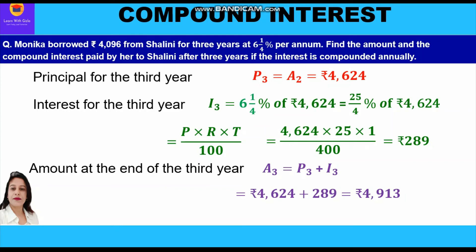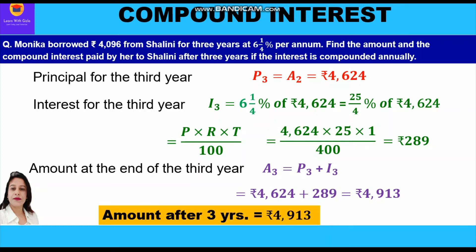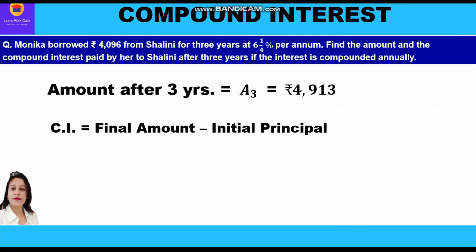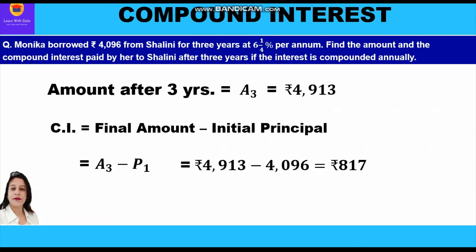This is the amount which Monica has to pay to Shalini after three years, that is rupees 4913. They are also asking us to find the compound interest, and compound interest is the difference between the final amount and the initial principal which Monica had borrowed. The final amount after three years is 4913 and the initial principal was 4096, so we subtract 4096 from 4913 to get rupees 817 as the compound interest.